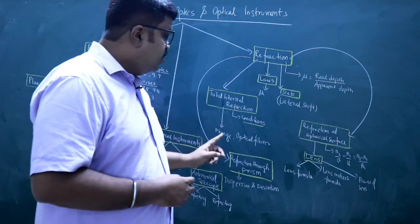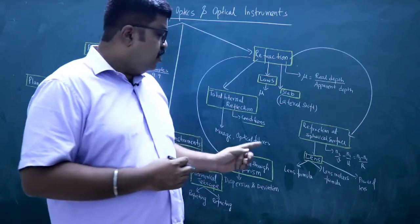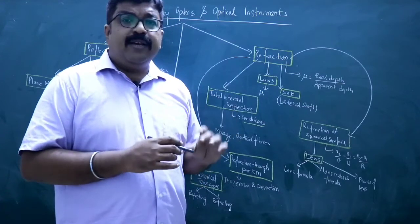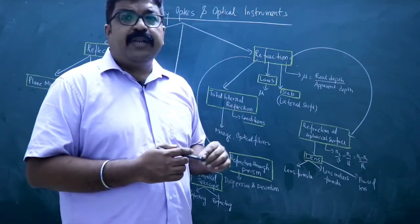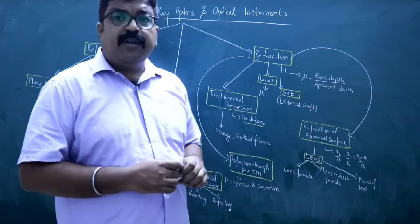After that, Total Internal Reflection has two phenomena. One is Mirage, Formation of Mirage, and one is Working of Optical Fibers. Optical Fibers - Core and Cladding, Refractive Index, Light, Ray Diagram. See the diagram of Optical Fibers.